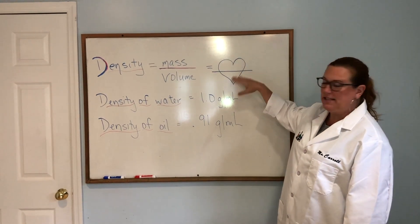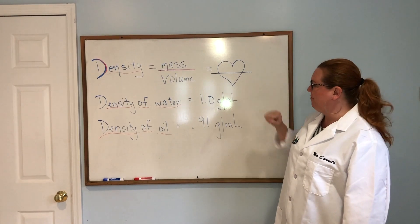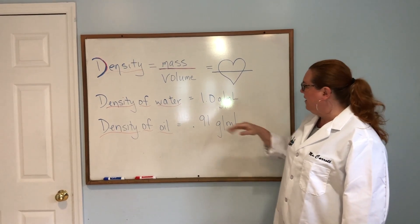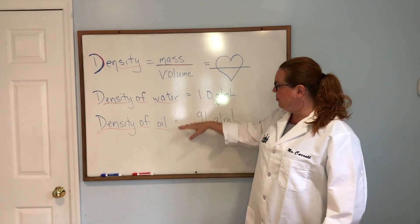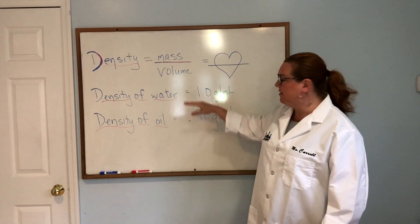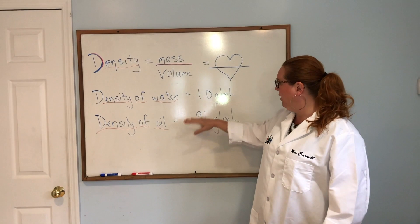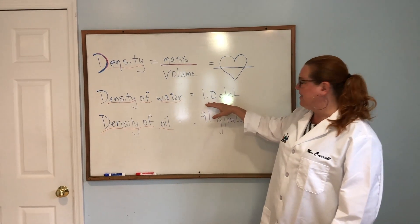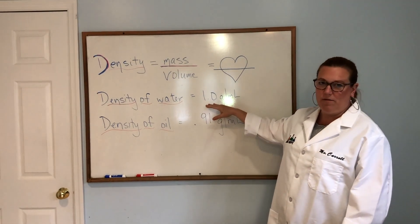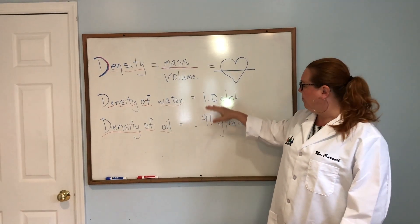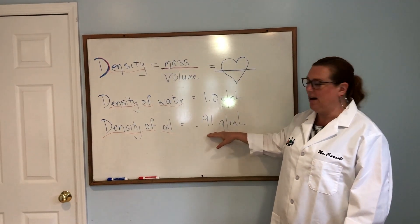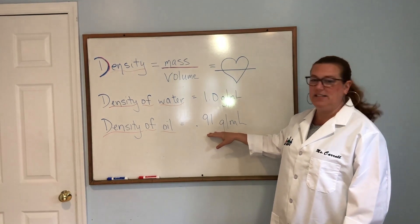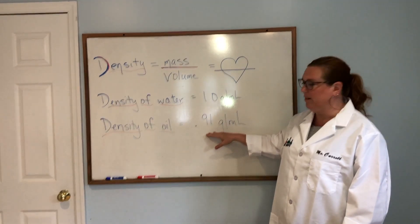the top of the heart makes the end, the bottom makes the big. So as we see here, there's two common substances: water and oil. The density of water is one gram per milliliter. The density of oil is approximately 0.91 grams per milliliter.